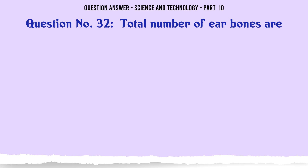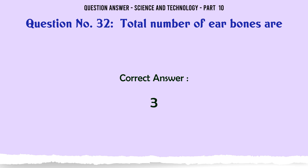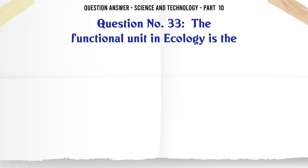Total number of ear bones are. A. 2. B. 3. C. 4. D. 6. The correct answer is 3. The functional unit in ecology is the.